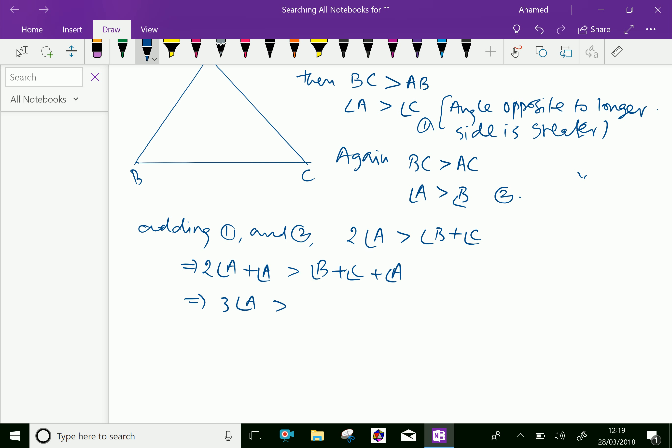3 times angle A is greater than angle A plus angle B plus angle C. Now, angle A plus angle B plus angle C equals 180 degrees by the angle sum property of a triangle. Therefore, 3 times angle A is greater than 180 degrees.